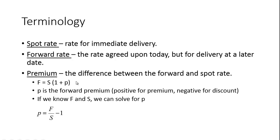We'll use P to refer to the premium for the forward rate. If it's positive, it's a premium. If it's negative, it means the forward rate is at a discount to the spot rate. If we happen to know F and S, we can solve for P, which is the forward rate divided by the spot rate minus 1.